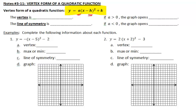That h value dealt with the left and right movement, and that k value dealt with the up and down movement. Now the vertex is specifically defined as the coordinate h, k.